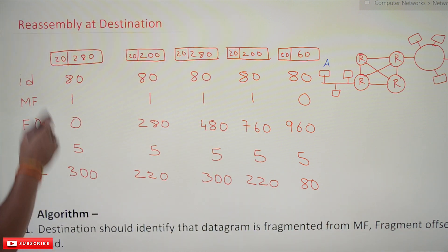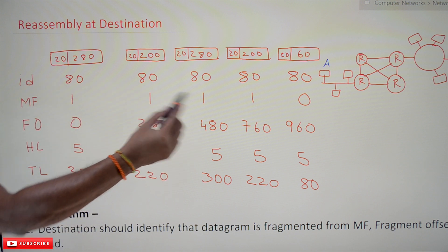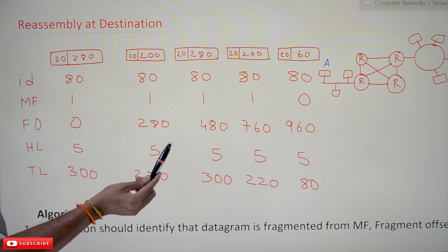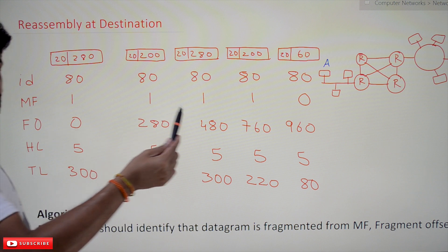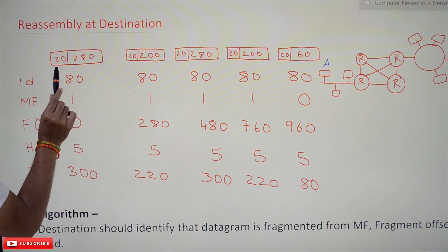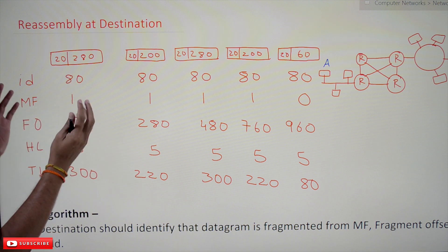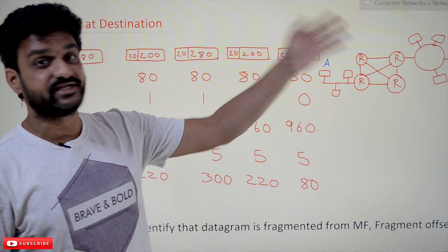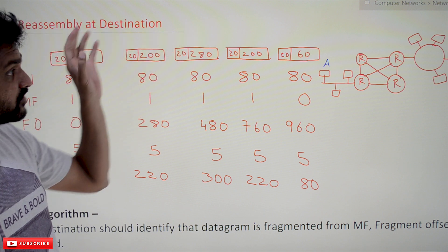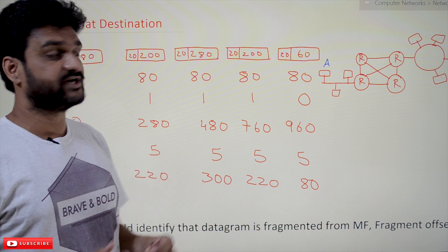Coming to this class — reassembly at destination. We have taken the example that we discussed in the fragmentation concept: the fields of IPv4 header — identification, MF, and fragment offset. Based on that example, these are the fragments that are generated and reach at the destination. We are using the same example to understand how reassembly at the destination happens.